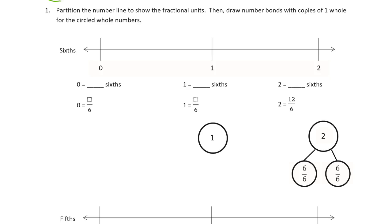Partition the number line to show the fractional units, and then draw the number bonds with copies of one whole for the circle whole numbers. So we need sixths. That's our fractional unit.